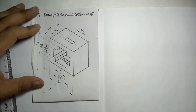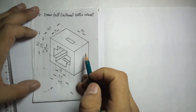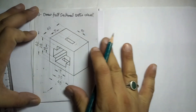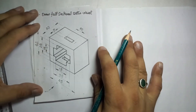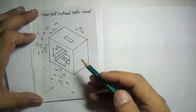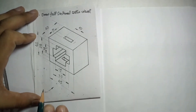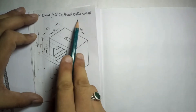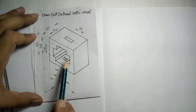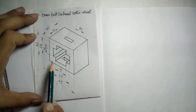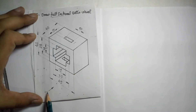Hello everyone. We will solve one question from the topic of sectional orthographic projection. Sectional orthographic projection means we have to draw the front view and top view of an object by assuming it to be sectioned from a particular point in a particular direction. The question says draw full sectional ortho views. There are three types: full, half, and offset, but here it is full sectional.